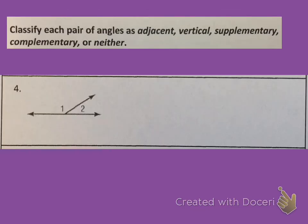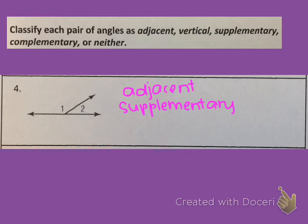Let's look at this pair of angles. Try this one on your own — press pause, and when you're confident in your answer, press play to check. These two angles are adjacent and supplementary. They are adjacent because they are right next to each other and share a common side. They are supplementary because the two angles form a straight line — two adjacent angles that form a straight angle of 180 degrees are supplementary angles.